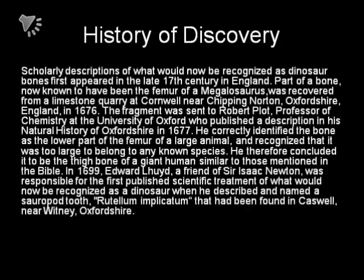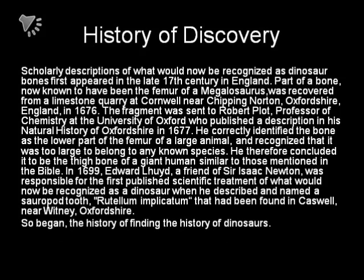History of Discovery. In the 17th century, more scholarly views and scientific descriptions of dinosaurs appeared in England. It started out with the femur of a megalosaurus, which was found at Cornwall in 1676. The fragment was then sent to Robert Plot, professor of chemistry at the University of Oxford, to publish a description in his Natural History of Oxfordshire in 1677. And then later, in 1699, Edward Lhuyd, a friend of Sir Isaac Newton, was responsible for the first published scientific treatment of what would now be recognized as a dinosaur, when he described and named the sauropod tooth Rutellum implicatum, that had been found in Caswell, near Oxfordshire. So began the history of finding the history of dinosaurs.